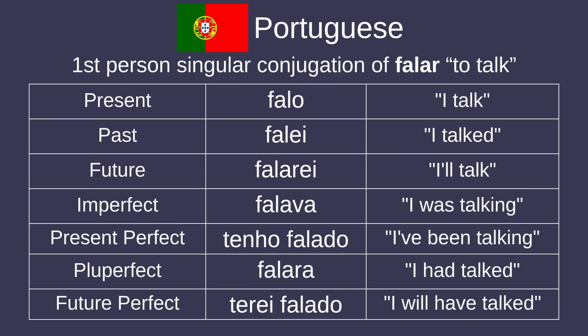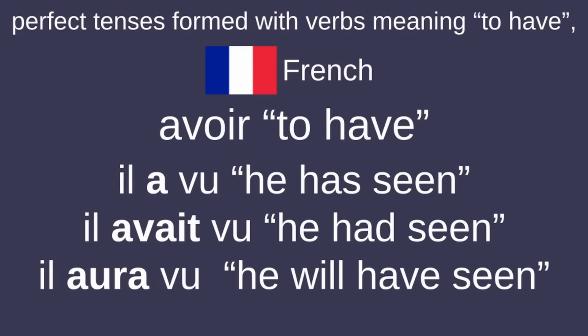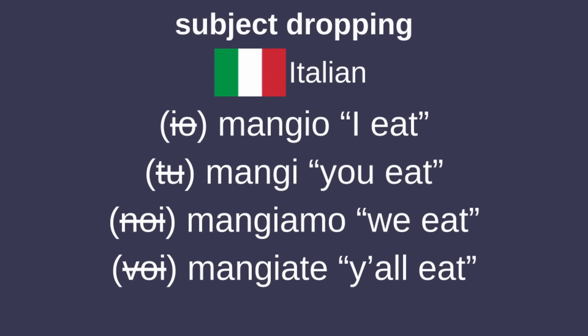The different verb forms usually include the present tense, the simple past, future, imperfect, present perfect, pluperfect, and future perfect, with the subjunctive and conditional moods having fewer distinctions than the indicative. There are also passive forms, in addition to past and present participles. The perfect tenses tend to be formed with verbs meaning 'to have,' and most Romance languages are pro-drop, meaning they can drop the subject pronoun if a conjugated verb is in the sentence.